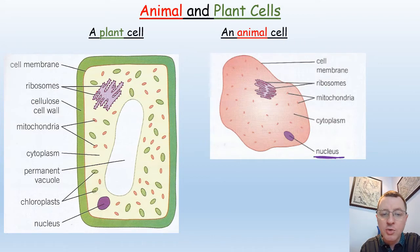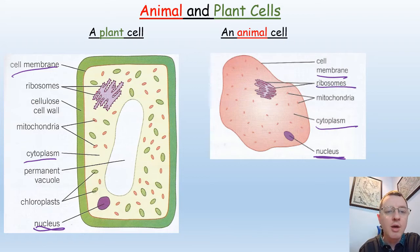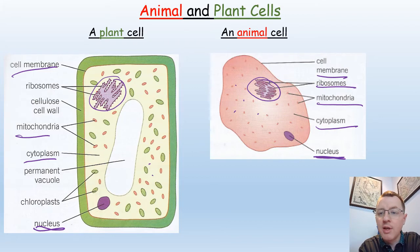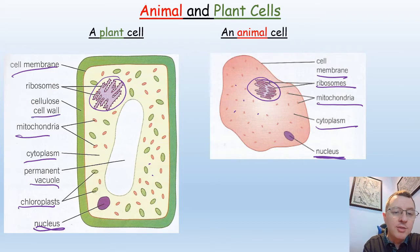Both animal cells and plant cells are eukaryotic — that means they have a nucleus. Both have a cell membrane, cytoplasm, and within that cytoplasm, both have ribosomes, which may be found on structures called endoplasmic reticulum or freely dotted about the cell. Plant and animal cells also both have mitochondria. That gives us five parts of the cell found in both plant and animal cells. However, plant cells also have a number of unique organelles: chloroplasts, large vacuoles, and a cellulose cell wall.